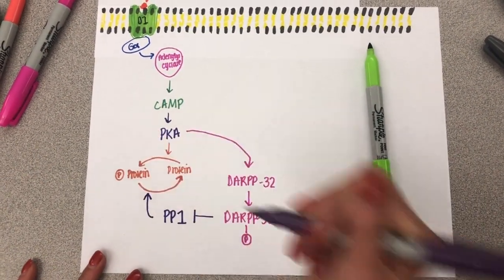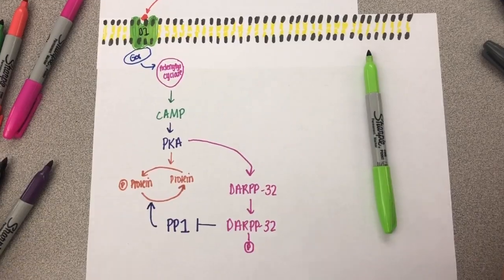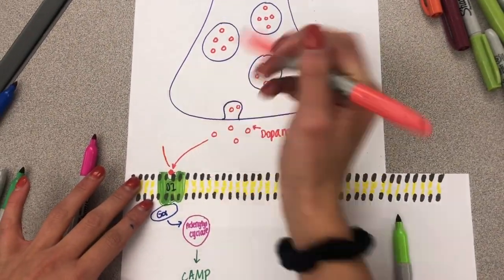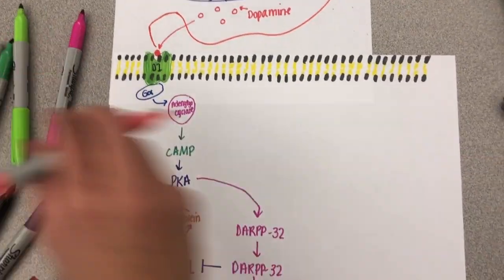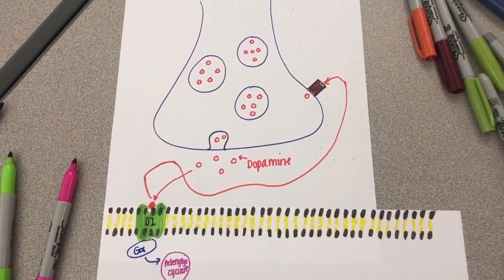Dopamine is then removed from the receptor by way of a neurotransmitter transporter, allowing dopamine back into the original neuron. This in turn undoes the response created by dopamine binding.